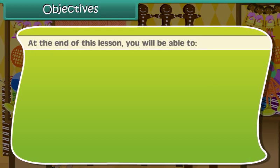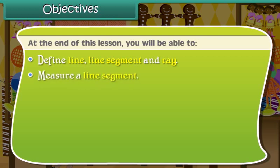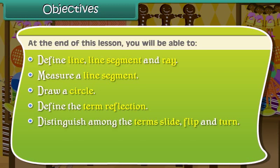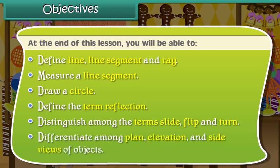At the end of this lesson, you will be able to: define line, line segment, and ray; measure a line segment; draw a circle; define the term reflection; distinguish among the terms slide, flip, and turn; and differentiate among plan, elevation, and side views of objects.